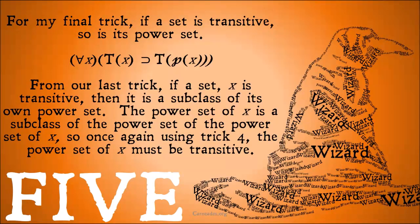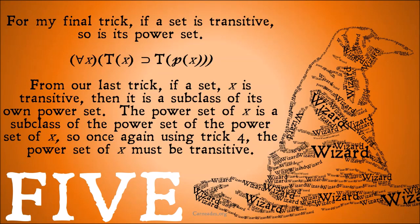And finally, for my fifth trick: if a set is transitive, so is its power set. If a set X is transitive, then it is a subclass of its own power set. The power set of X is then a subclass of the power set of the power set of X. So once again, using trick 4, the power set of X must be transitive.